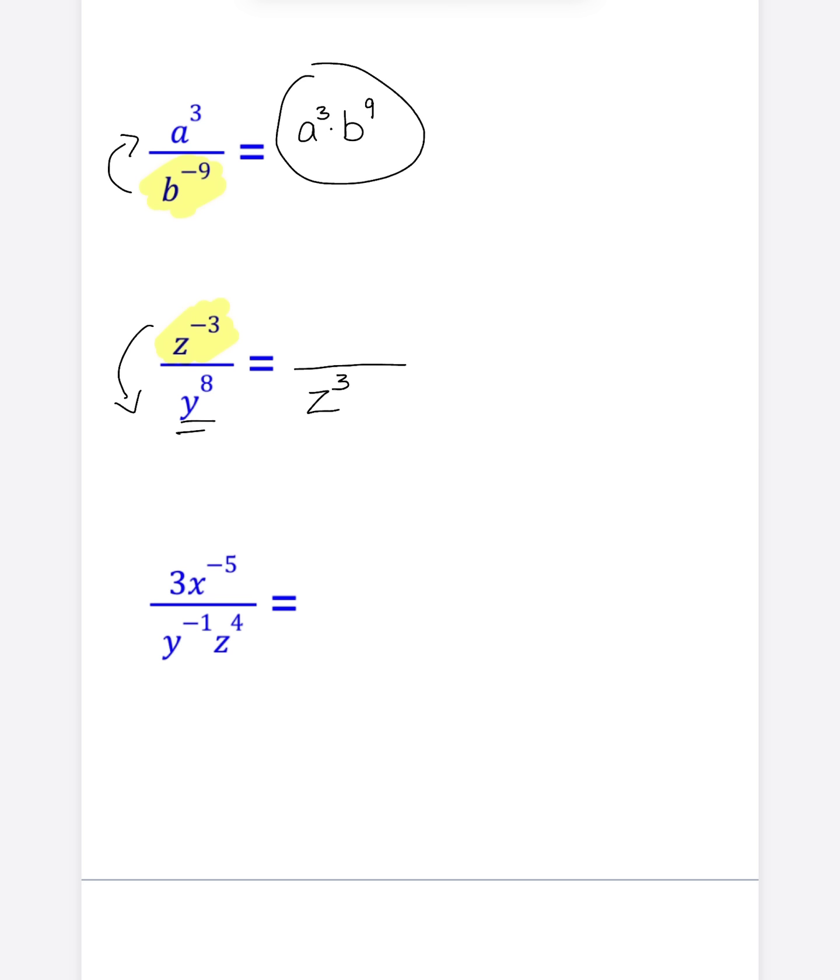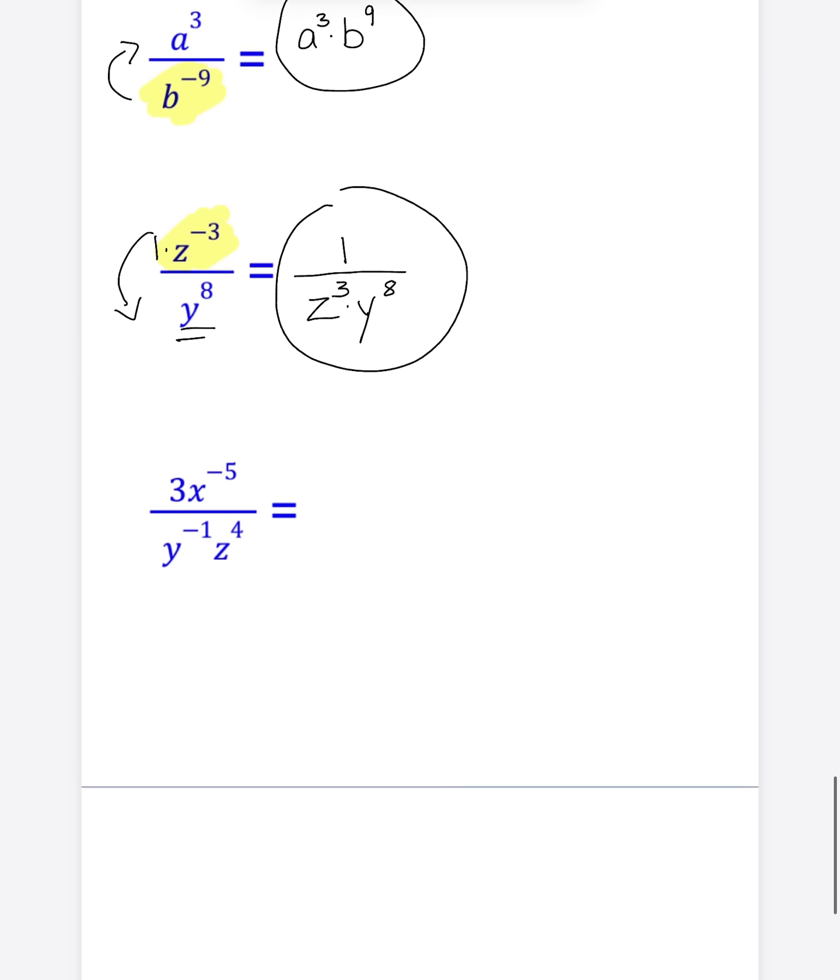Now this Y to the eighth, did it have a negative exponent? No. So what do we do with it? Nothing. We leave it right where it was in the denominator where it's now being multiplied by Z to the third. Now we can't leave this numerator empty, so we're going to go ahead and put a one here because Z to the negative third is the same thing as one times Z to the negative third. And we are done with the second example.